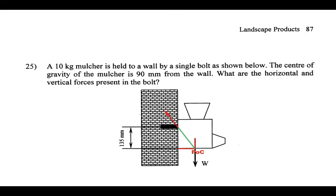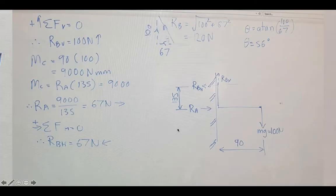If you're comfortable using the three-force method it can really help to solve more complicated couple questions. Find the point of concurrency, then draw the line from the bolt force to that point - this gives the angle of the bolt force. The question asked for vertical and horizontal forces, but if you wanted to go a little bit further you could find the resultant bolt force using this approach.